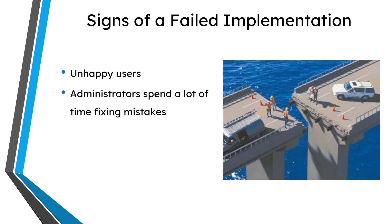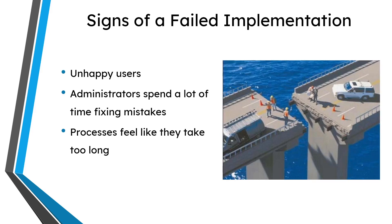Another sign is that your administrators are overworked as a result of the failure. They spend a lot of time fixing mistakes or helping users trying to get their work done. Another sign is that it just takes too long to get stuff done — things like releasing documents, revising them, or performing BOM management. They just feel like it should be easier and faster. And another, probably the most common sign, is you just have a gut feeling like, hey, this should be going better than it is.